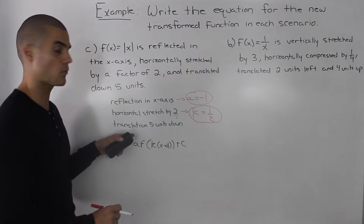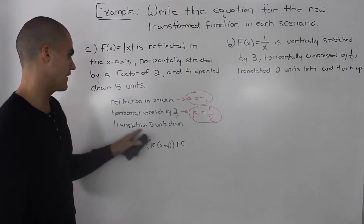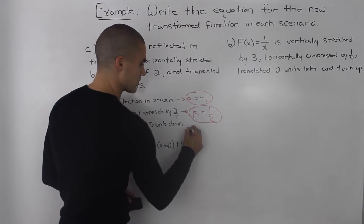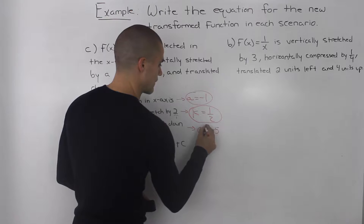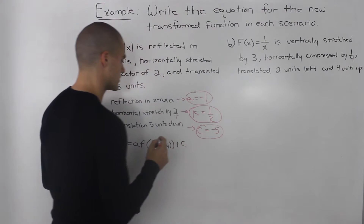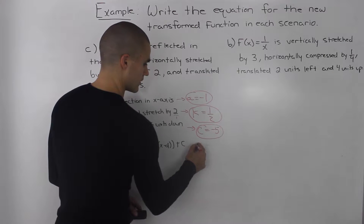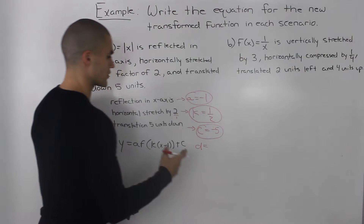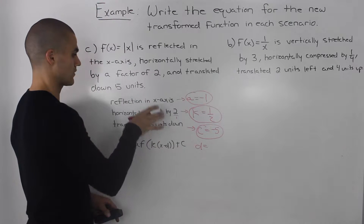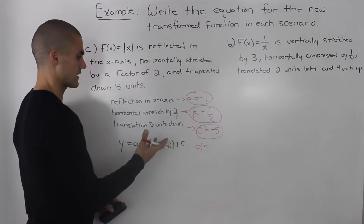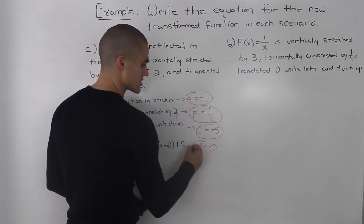If there was a reflection in the y-axis, then k would be negative 1 half. A translation 5 units down affects the c value, so c is equal to negative 5. The d value tells us whether the function gets translated to the left or right. However, in this scenario there is no horizontal translation, so the d value is just 0.